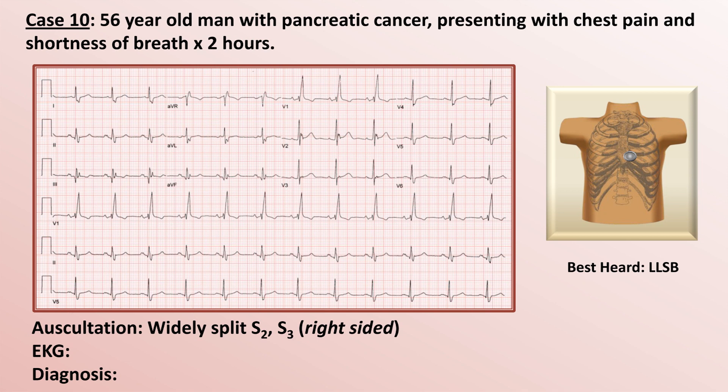In both V1 and V6, the QRS duration is around 120 to 130 milliseconds, with the upper limit of normal being 120. With a prominent RSR' pattern in V1 and prolonged S waves in leads 1, AVL, and V6, the etiology is a right bundle branch block.